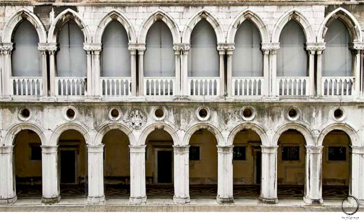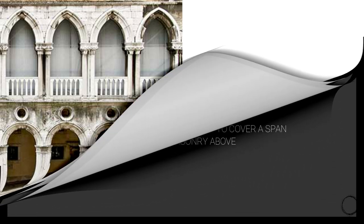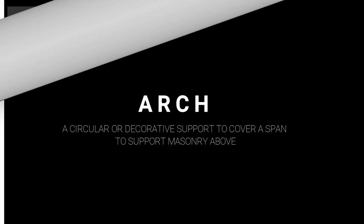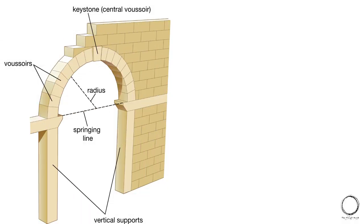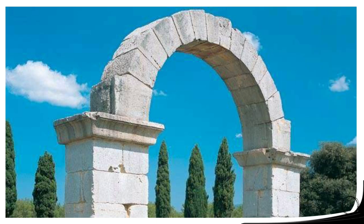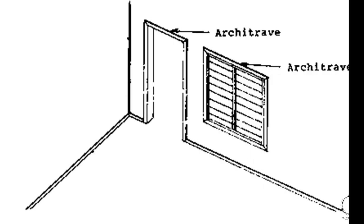Looking at the image, arcade means many arches together with vertical supports. They can be a semicircle arch, a pointed arch, or any other kind of arch as you can see in the diagram. Arch means a circular or decorative support to cover a span and support masonry above. You have two vertical supports and a radius of the arch which supports the masonry above.